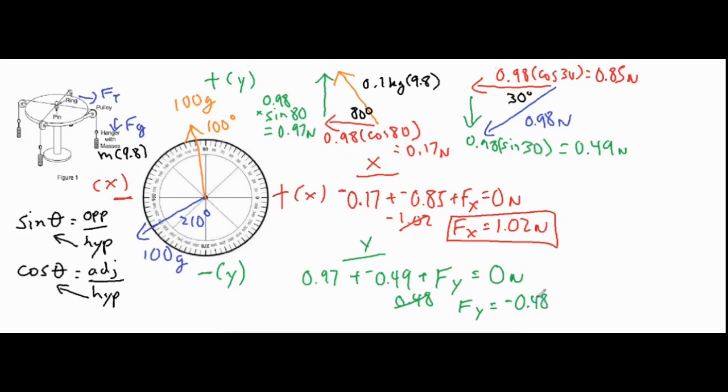If we take positive 0.97 and subtract 0.49, we get 0.48. We subtract that from both sides, so then F of y equals negative 0.48 newtons. Now we have our components for our final resultant force. What we're going to do is add these two up tip to tail. I have positive 1.02, so that is to the right.